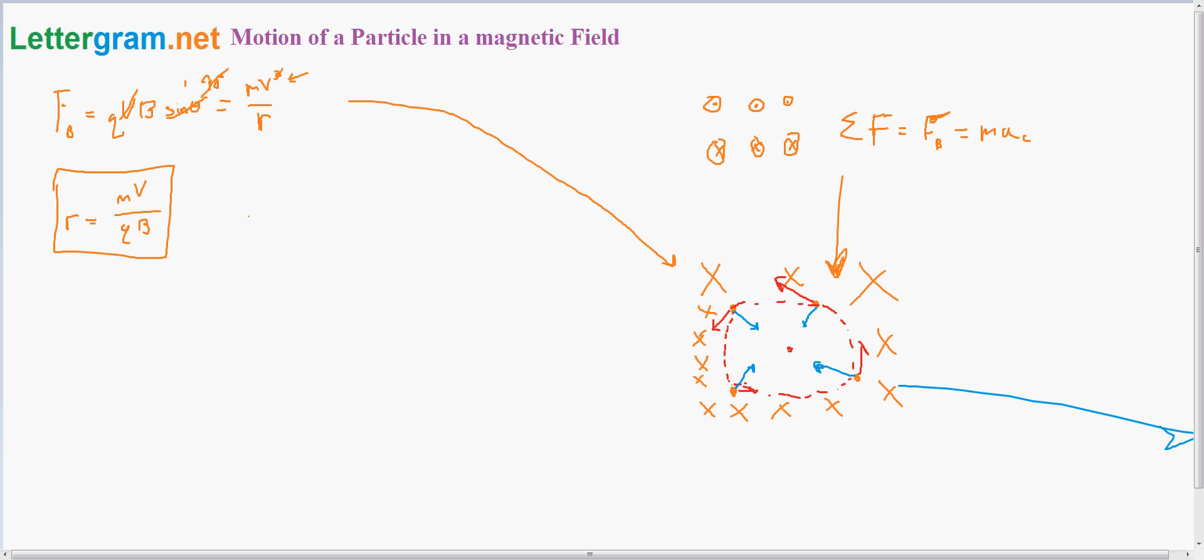Here's the angular speed, which is equal to the velocity divided by the radius. This is the velocity tangent to the radius. That's equal to QB divided by M.